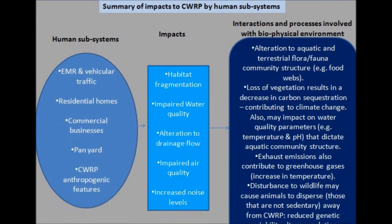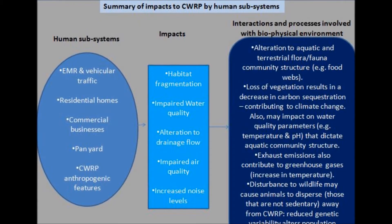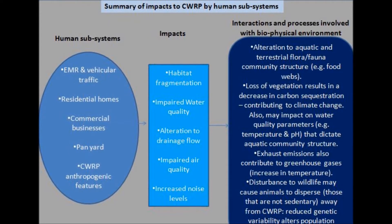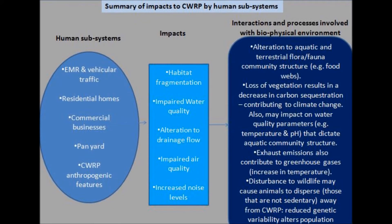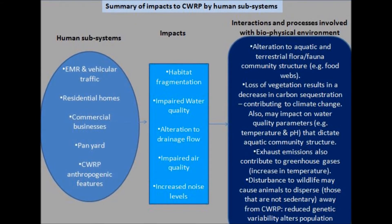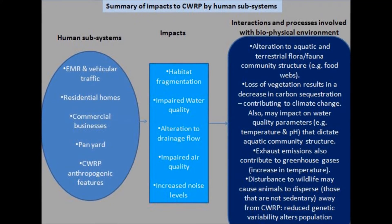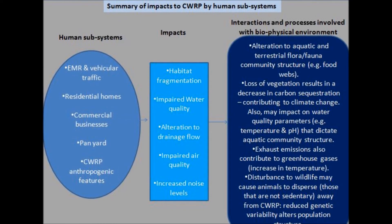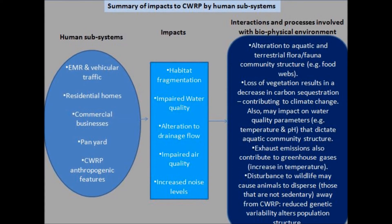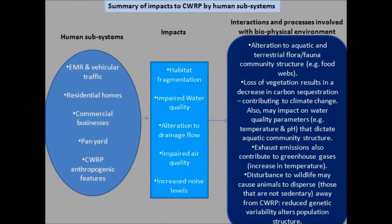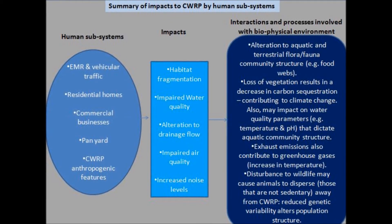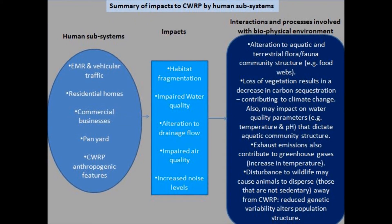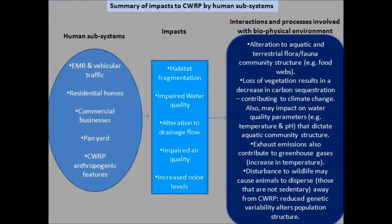Interactions and processes involved with the biophysical environment include alterations to aquatic and terrestrial flora and fauna community structure. Loss of vegetation may impact on water quality parameters such as temperature and pH, which can dictate aquatic community structure. Exhaust emissions contribute to greenhouse gases by increasing temperature. Disturbance of wildlife may cause animals to disperse, especially those that are not sedentary, away from the park, resulting in reduced genetic variability which alters population structure.